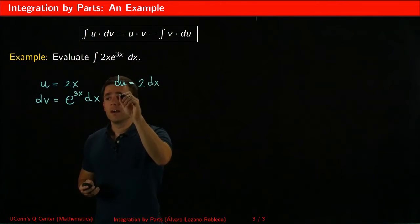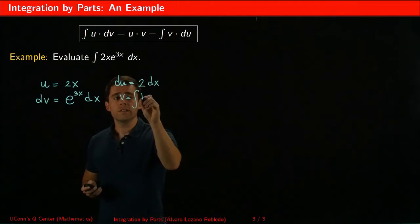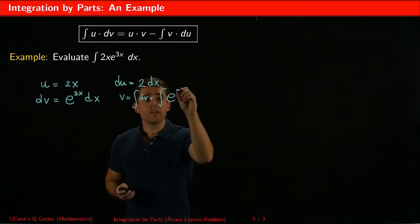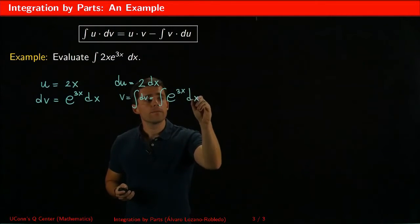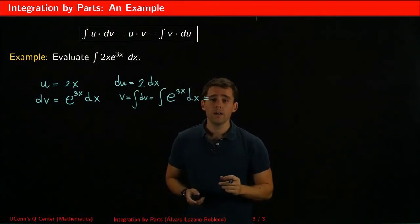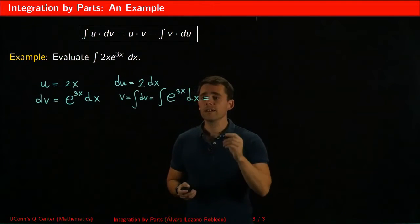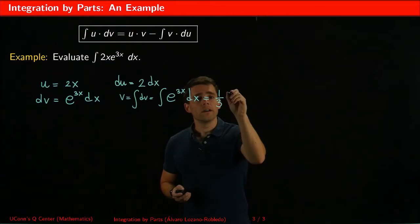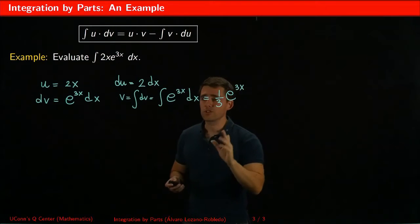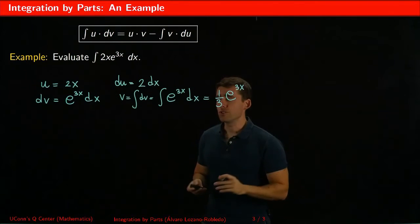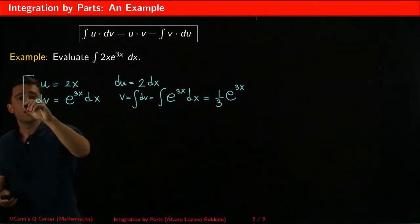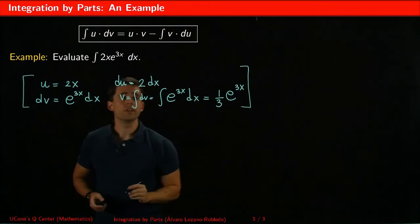And v is going to be the integral of dv which is the integral of e to the 3x dx. Either you know it's an immediate integral or you can calculate it using u substitution with u equals 3x. But that answer is 1 third of e to the 3x plus a constant. Though v is actually just one integral, we don't need the full generality of all the antiderivatives of e to the 3x. Once we know what are my choices of u and dv, I've succeeded to calculate all those.